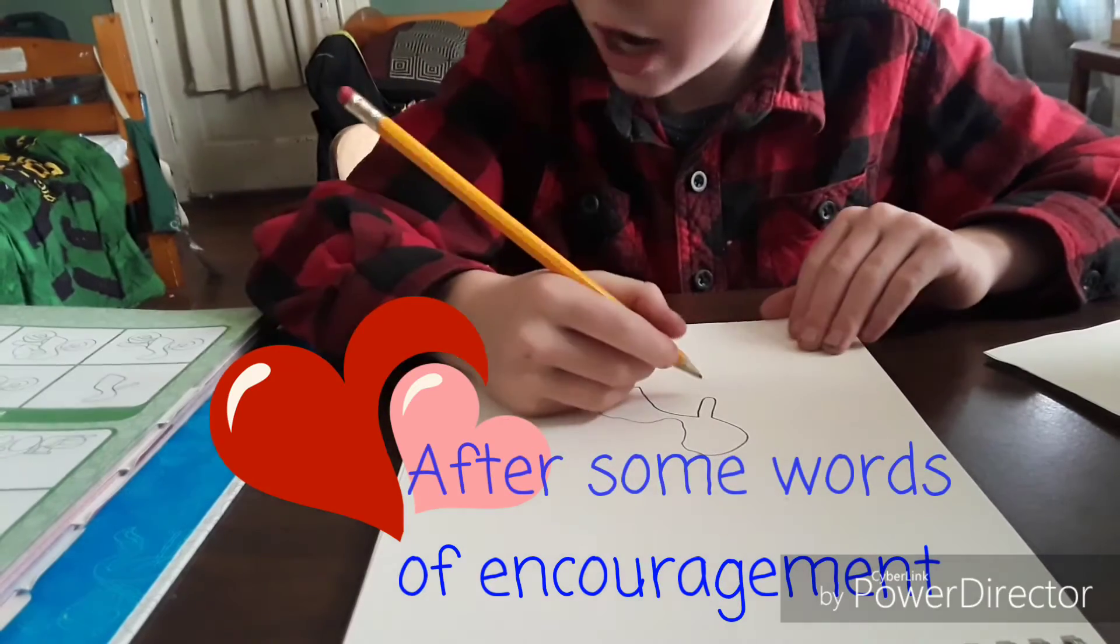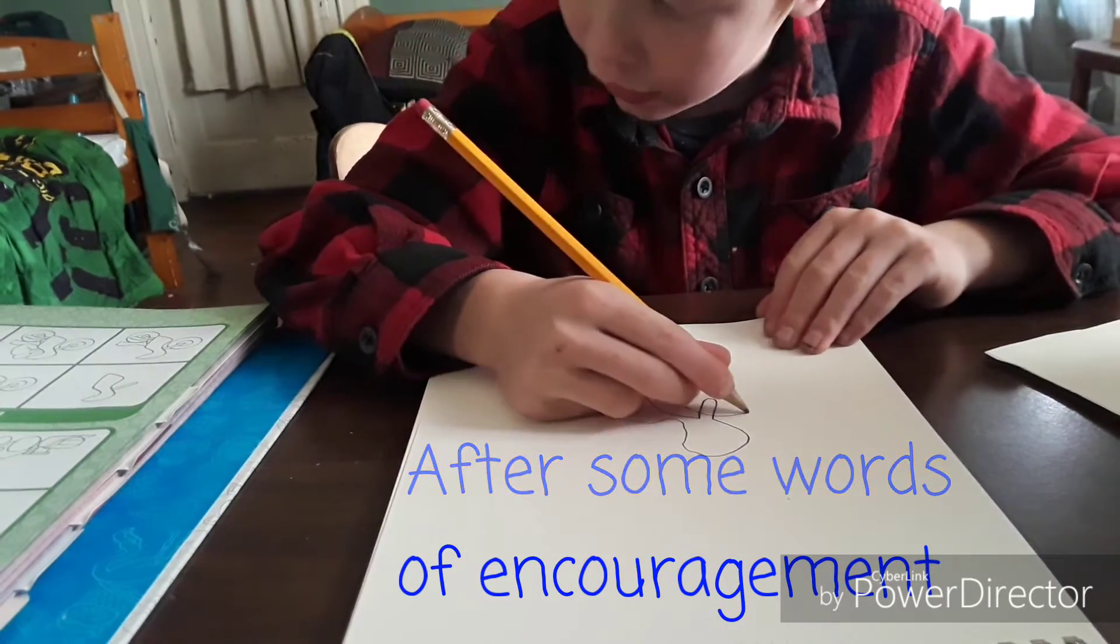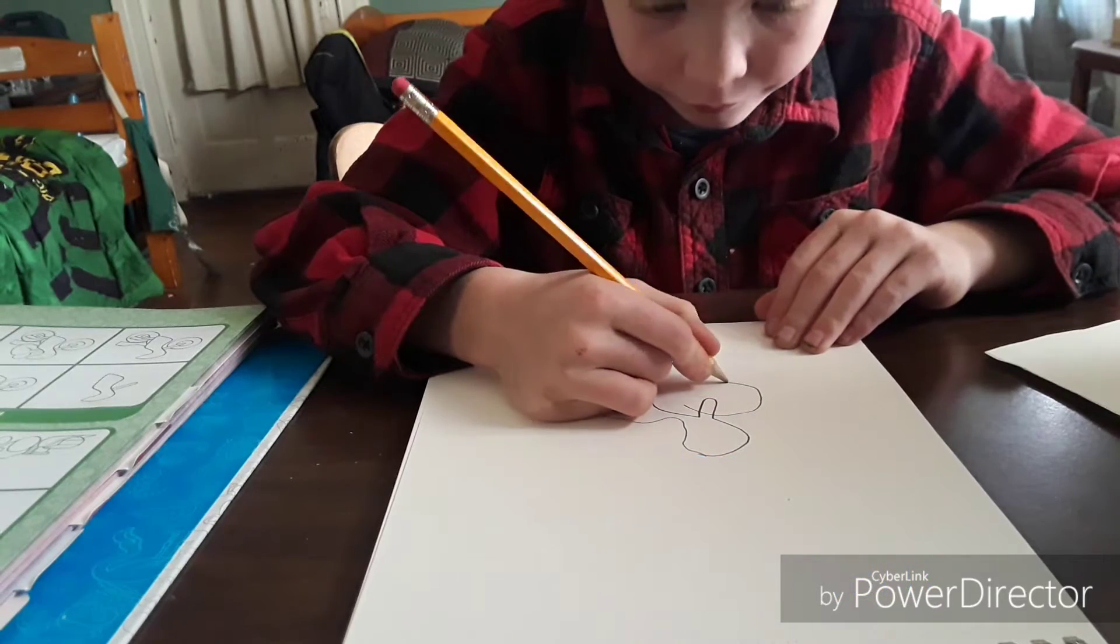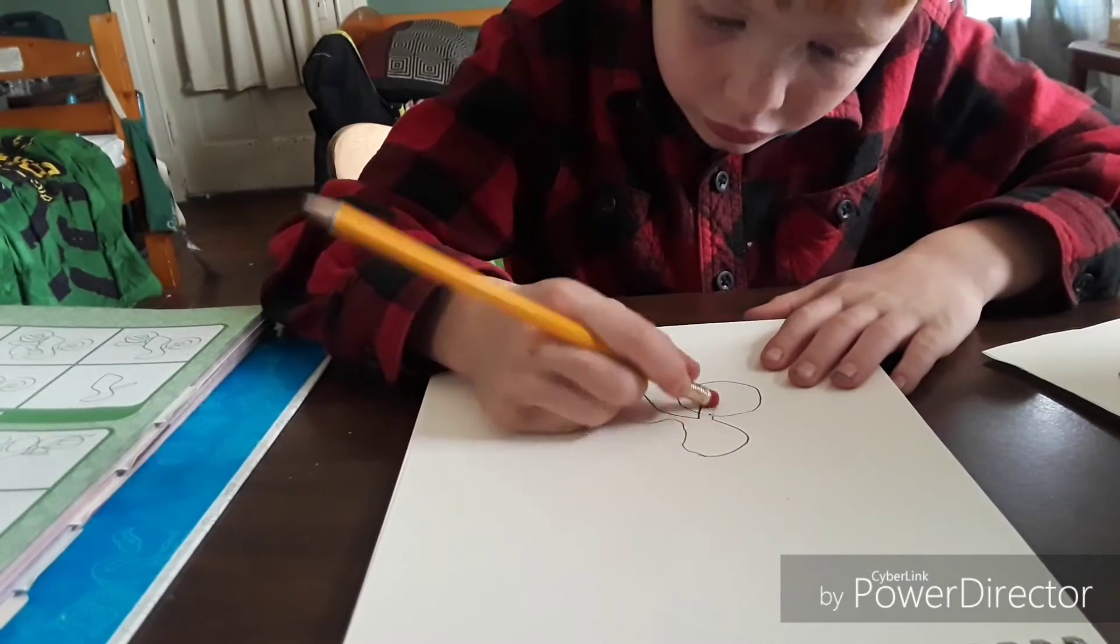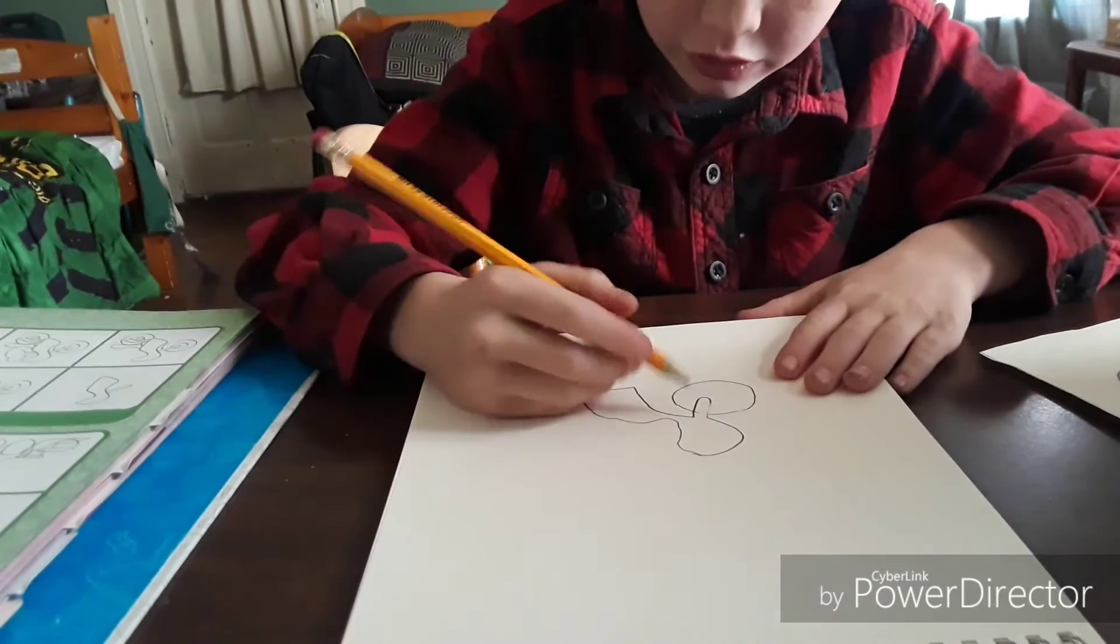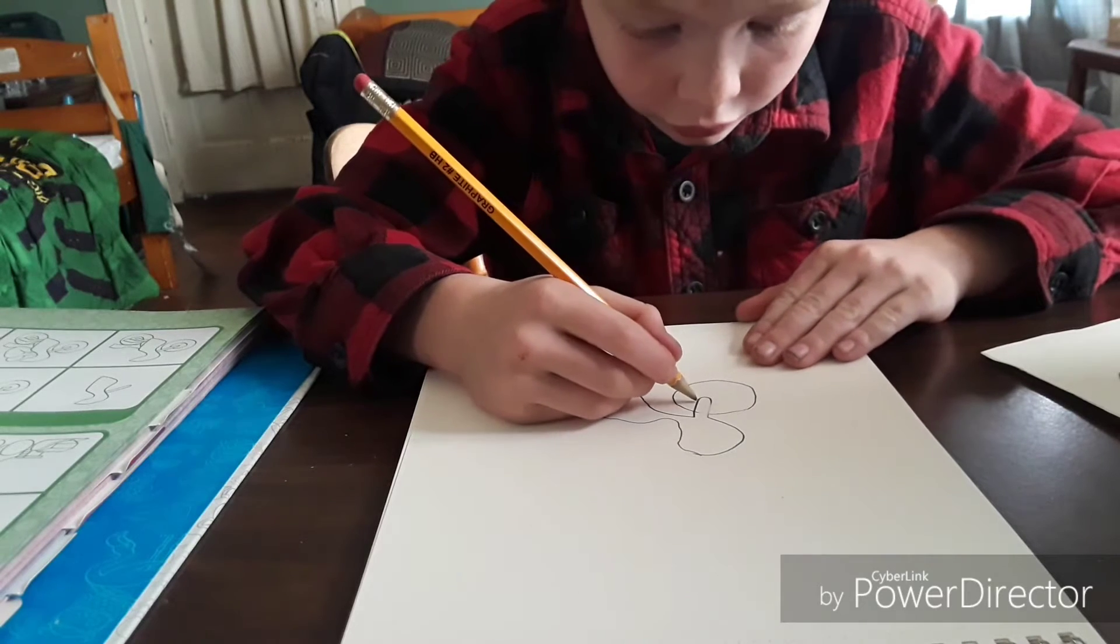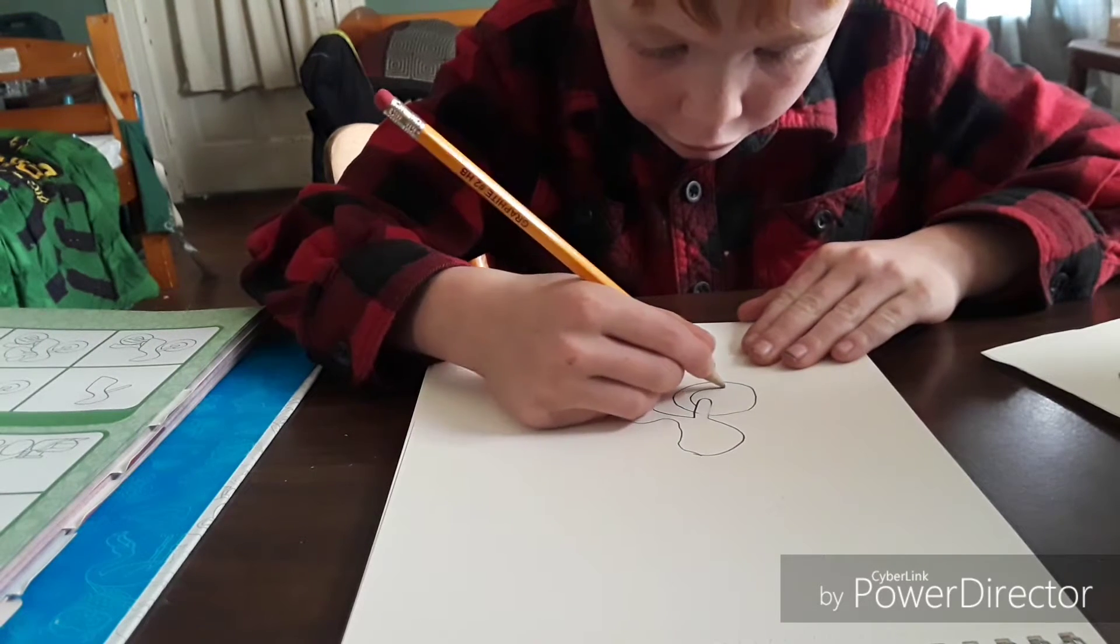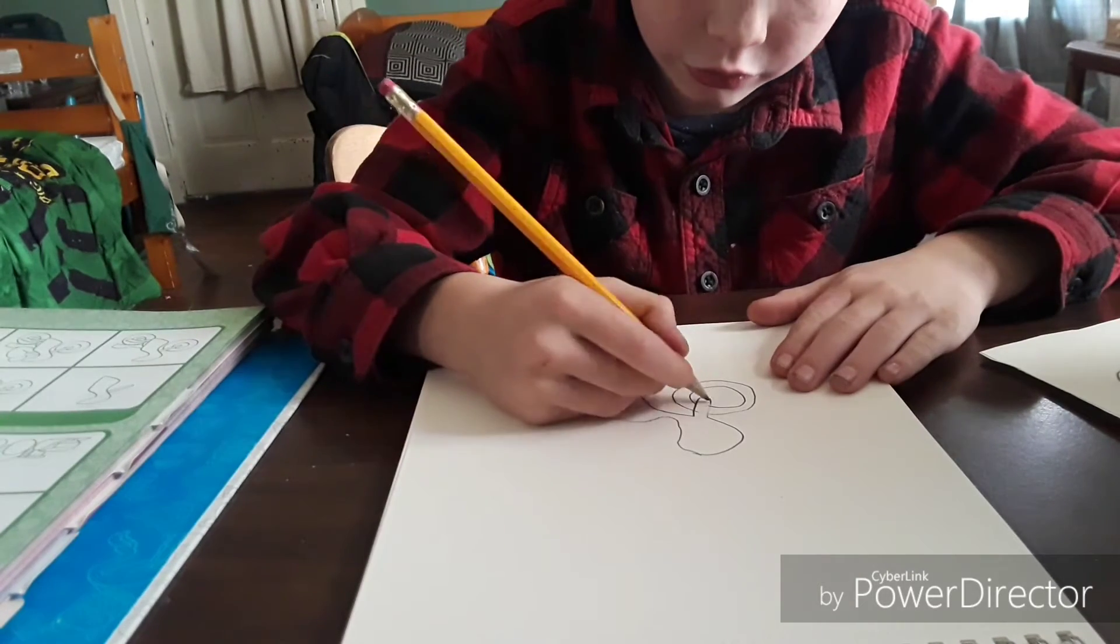So I'm going to draw this tire. Oh, I messed up a little, sorry guys. Don't do that. Don't make it go like that. Then we're going to do another circle, like a bubble letter. There, thank you very much.